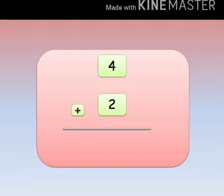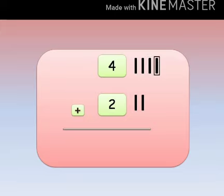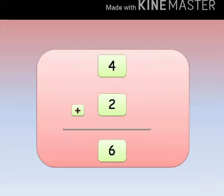This is another arrangement for addition. The question is 4 plus 2. For this, we are going to follow the same method. For 4, we will take 4 lines: 1, 2, 3, 4. For 2, we will take 2 more lines: 1, 2. Let's count all the lines all together: 1, 2, 3, 4, 5, 6. It means total 6 lines are there. So our answer is 4 plus 2 equals to 6.